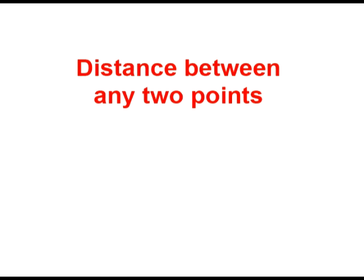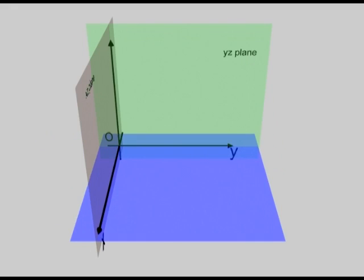Distance between any two points. The two points P1 and P2 have coordinates x1, y1, z1 and x2, y2, z2.